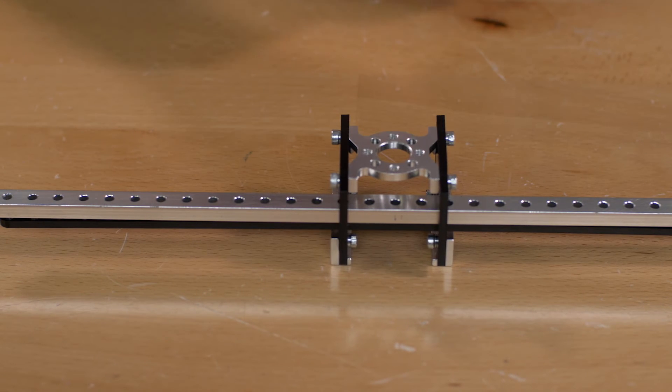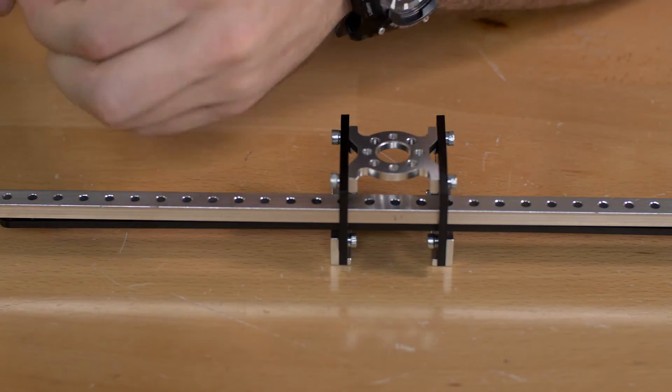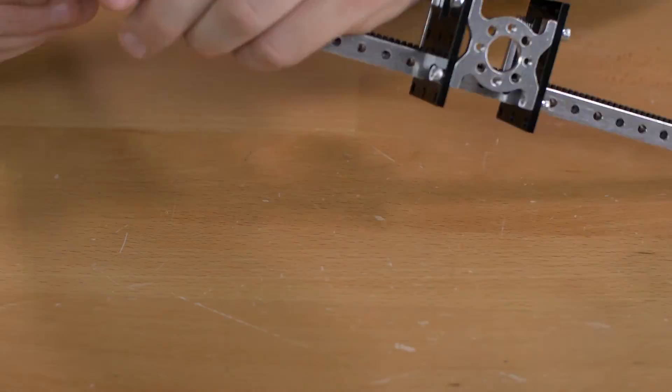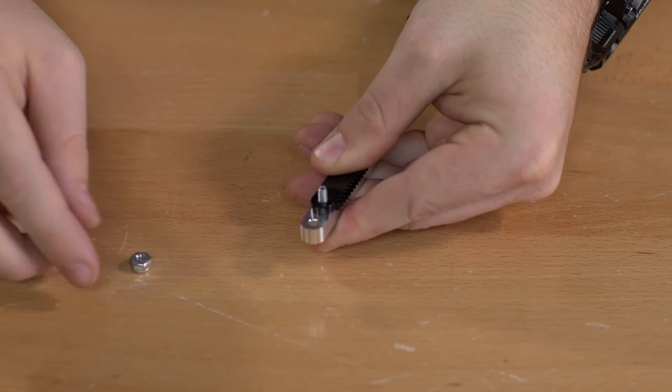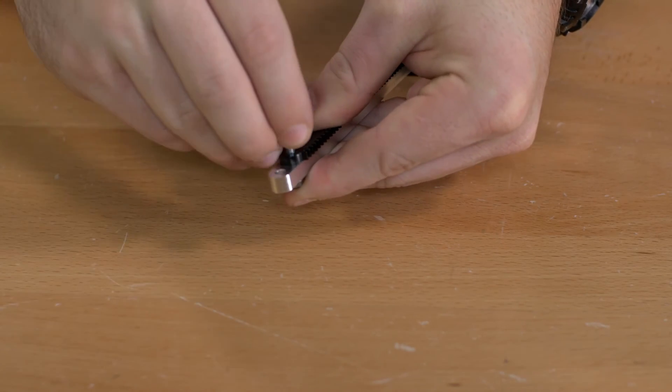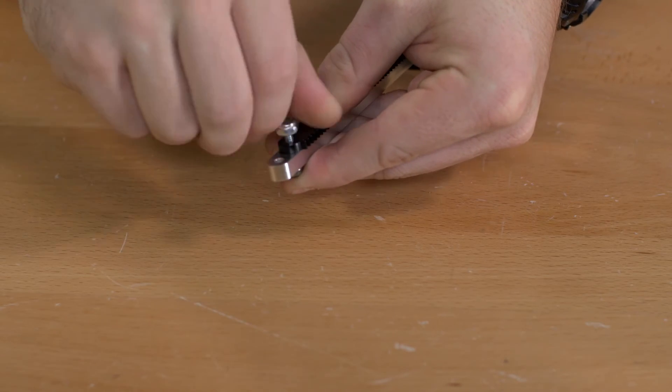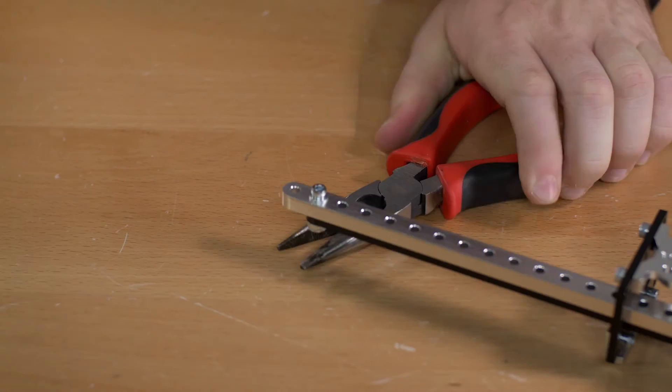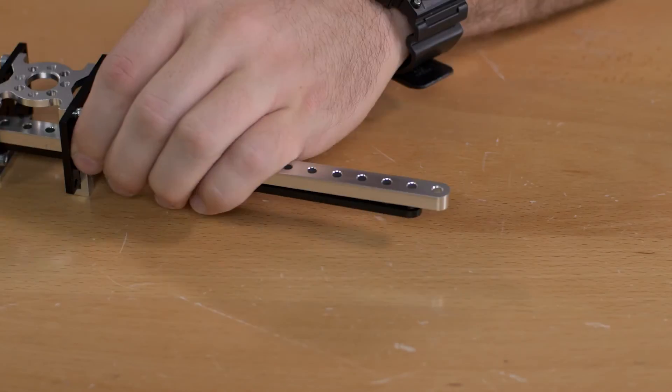On the other side of that you're going to use a lock nut. For that part you're going to have to use a pair of pliers to get that all together. You'll do the same thing for the other side.